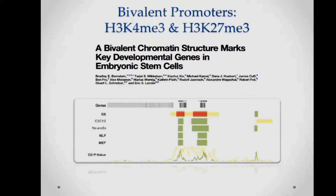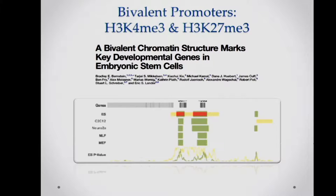The idea of a bivalent promoter came from two papers in 2006 — one from Brad Bernstein with Eric Lander, and another from a second lab. Both described, using ChIP-chip, the co-localization of H3K4me3 and H3K27me3. Brad showed that when these two marks co-localized at gene promoters in mouse embryonic stem cells, they were enriched for developmentally regulated genes — the idea being that the promoter is in a poised chromatin state, and once ESCs receive a differentiation signal, some genes become active and some remain repressed.